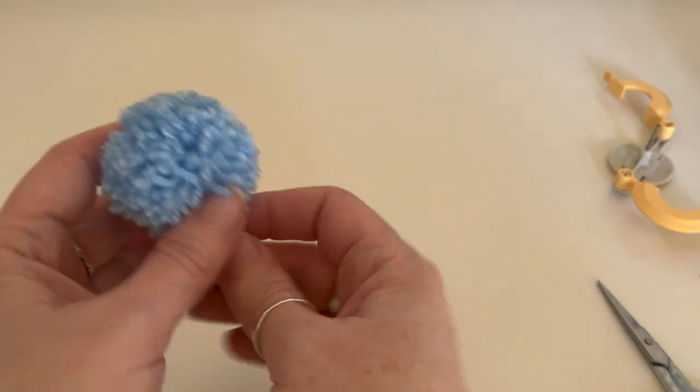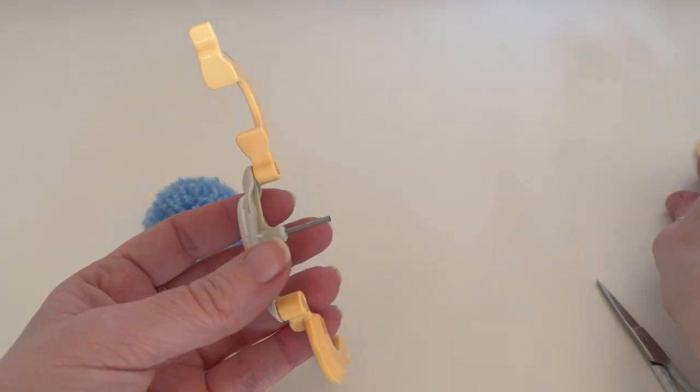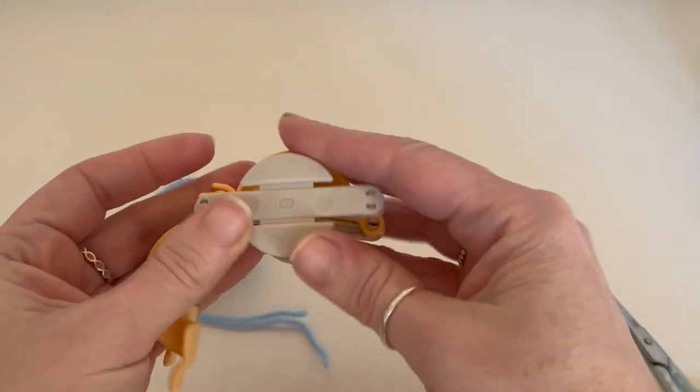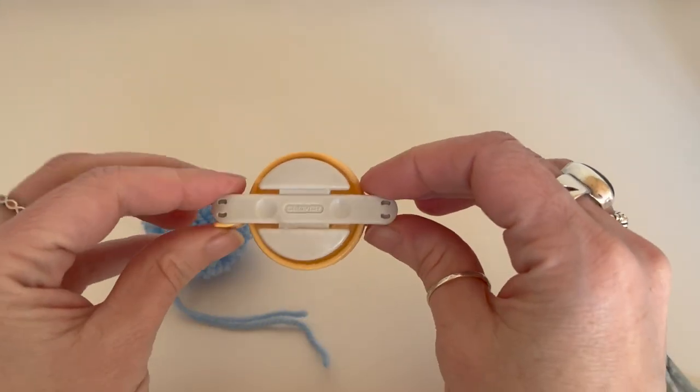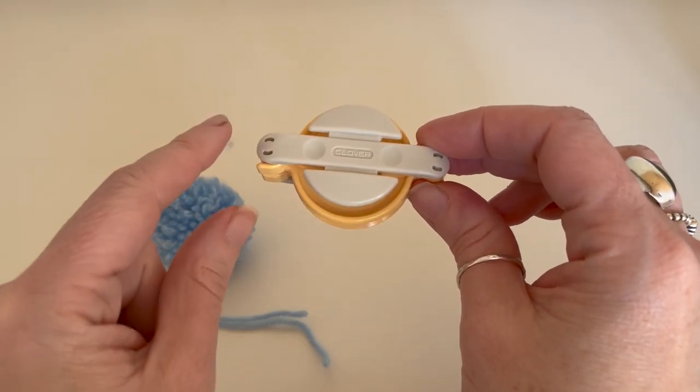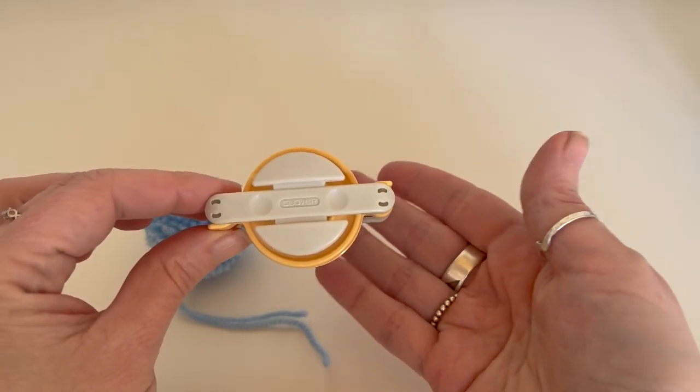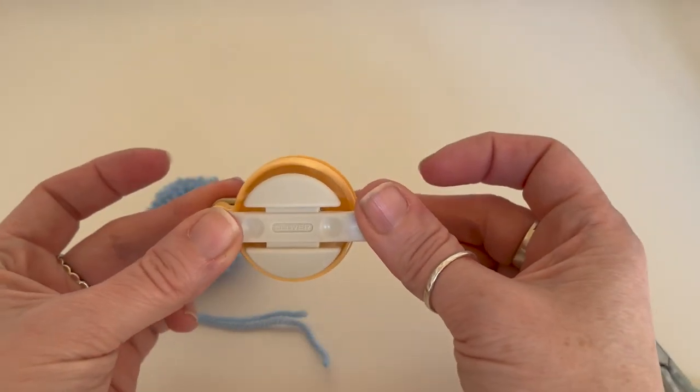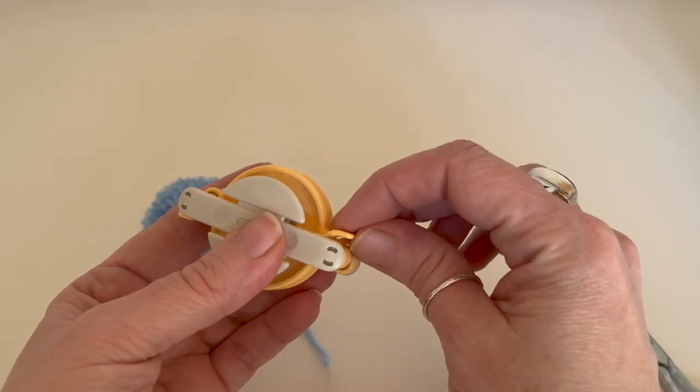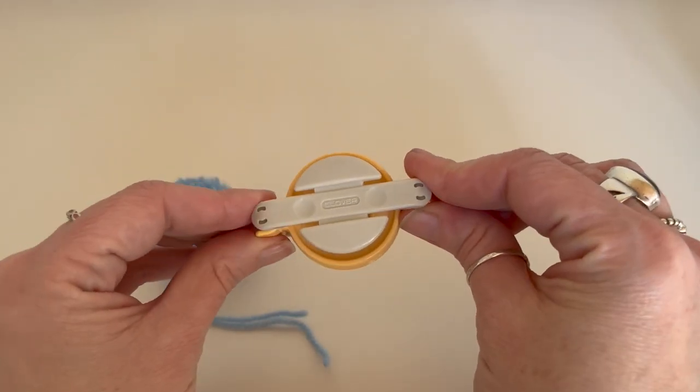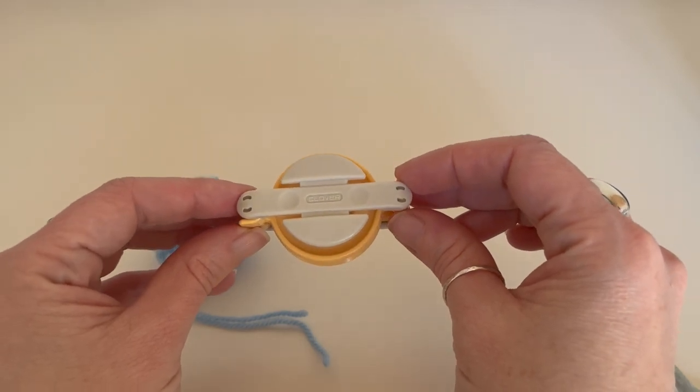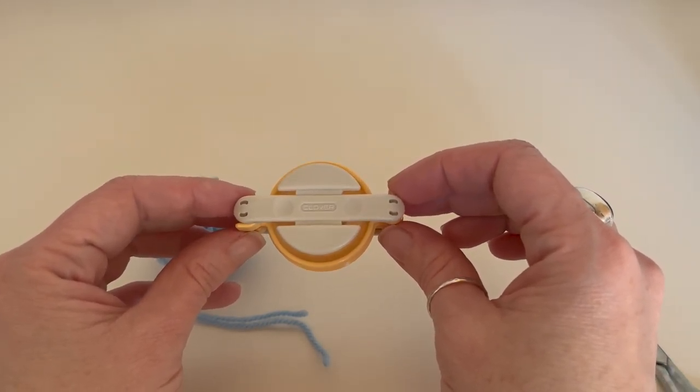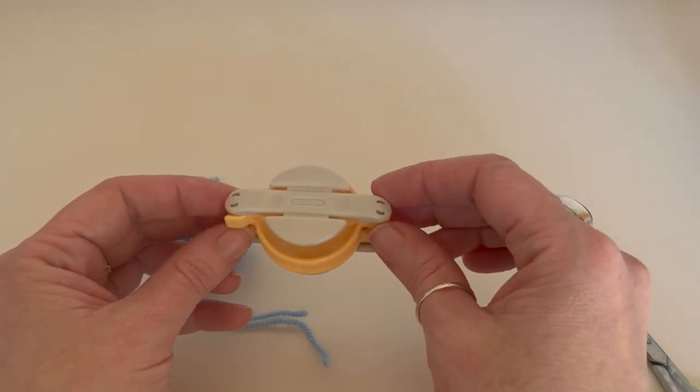So there we have it, how to use a pom-pom maker, really easy. I'll leave the links to these specific Clover ones in the description box and I'll leave a link for a generic brand as well which is sometimes a bit cheaper. But these are really sturdy, I sometimes find with the cheaper ones they feel a bit, the plastic's a bit thin on them. So the Clover ones are definitely the better ones to go with, but if you're on a budget it doesn't matter, you can just go with the generic non-branded ones. This isn't an ad by the way, I just use a lot of Clover stuff.